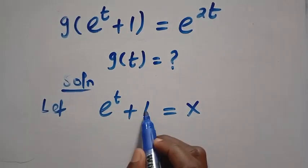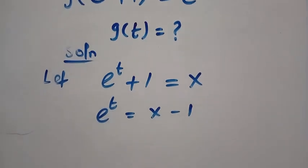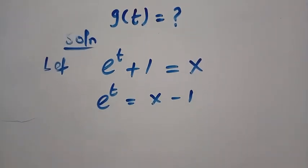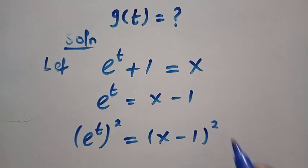Then, let's take x to the other side. We have e^t equals x minus 1. Then, let's take the square of both sides. By squaring both sides, we have (e^t)^2 equals (x minus 1)^2.